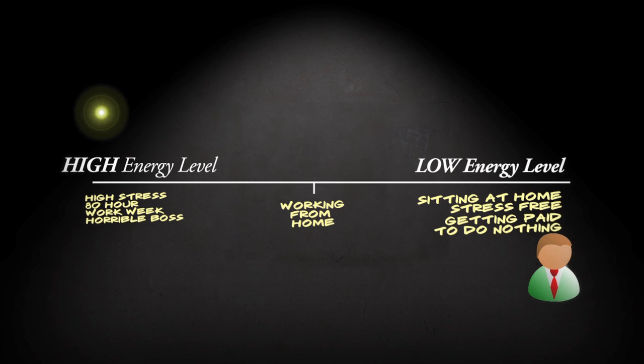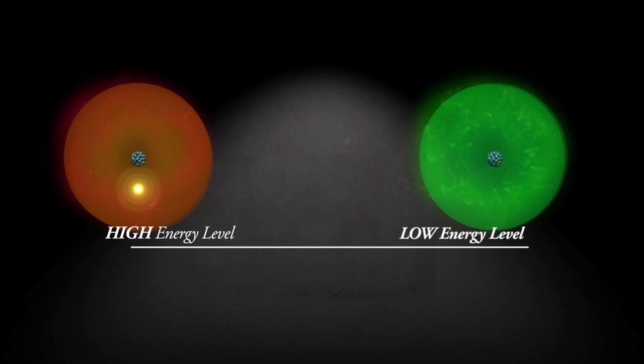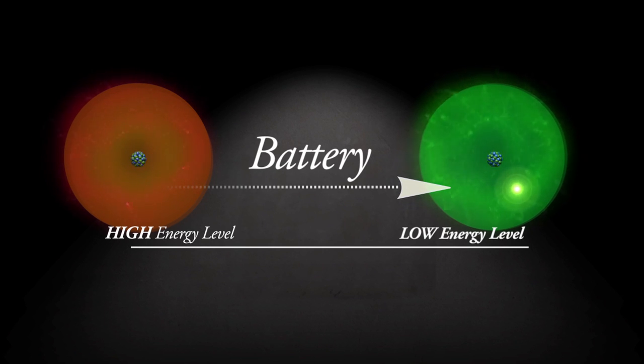For electrons, buzzing around some atoms is like working in a high-stress environment. And buzzing around others is like sitting at home and getting paid for nothing. A battery basically gives electrons a path to a happy, stress-free life, but makes them work for it. Which we'll get to in a second.